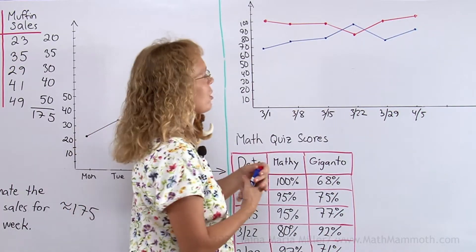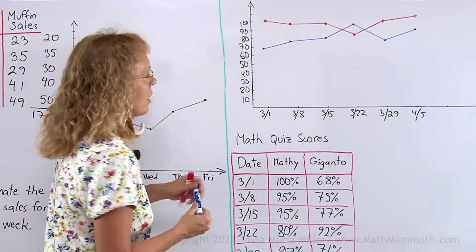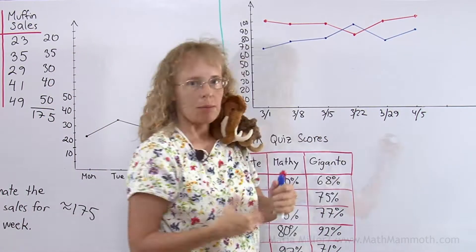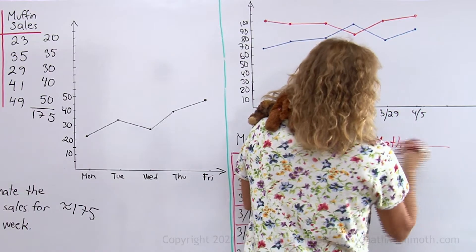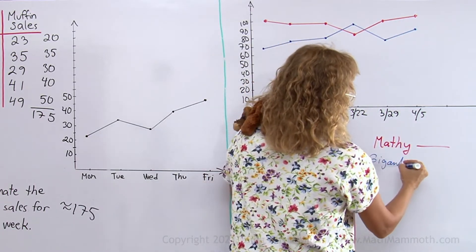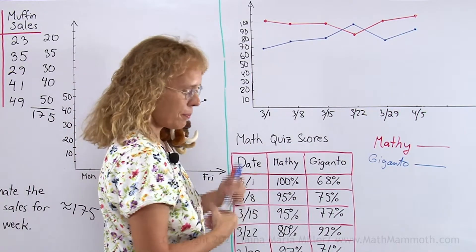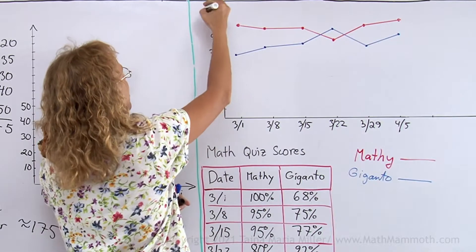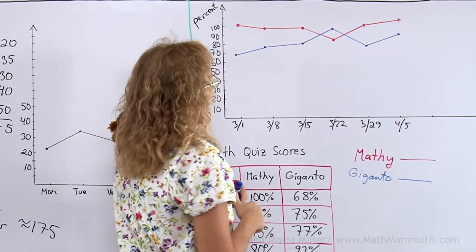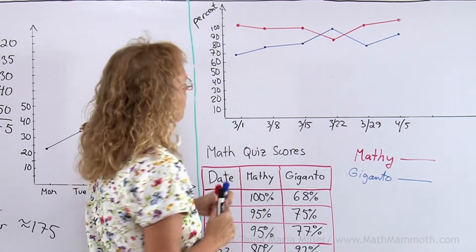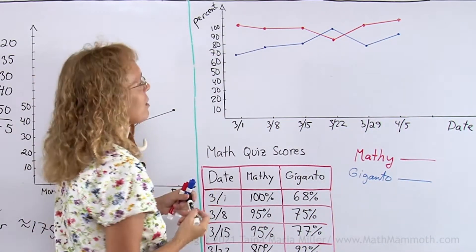Lastly, it's very possible that you would show this graph to somebody without all this information in the table, so we need a legend. That means something that tells the person how to differentiate. Mathie is the red line, and then, Giganto's is the blue one. So that needs to be added to the graph, or be somewhere near there, so people can see which one is which. We also could add here, percent. And the title for the whole graph would be Math Quiz Scores, and this one is date, of course.